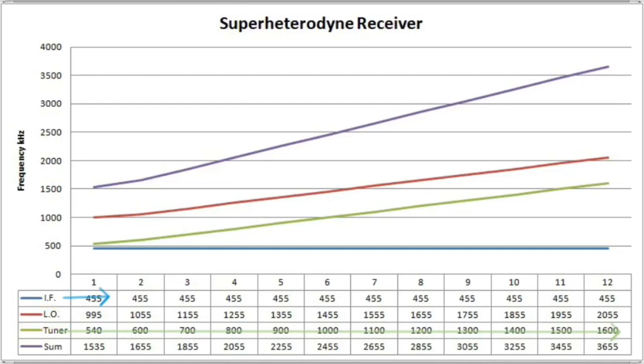If you look at the difference, the IF, you can see we're consistently 455 kilohertz all the way across. So that's the frequency that we'll use going forward, and that goes into the transformers T1 and T2 that will resonate at 455 kilohertz. We'll sharpen up things, narrow the bandwidth, and then amplify the signals at that point before converting things back to audio.